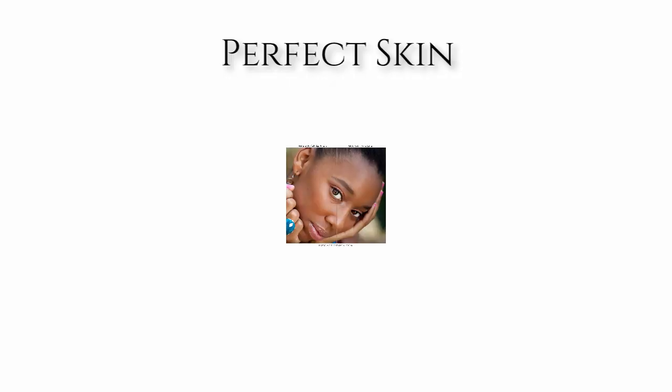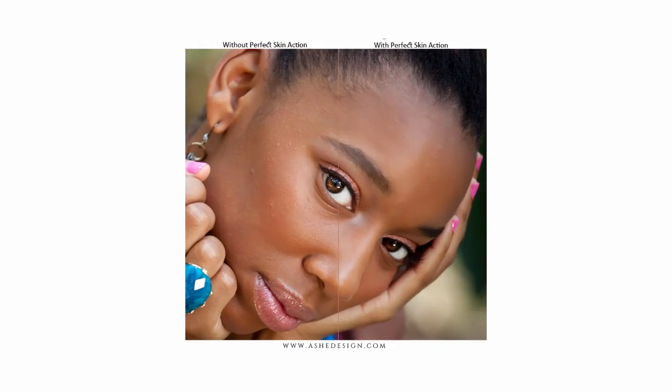First we'll look at the Perfect Skin. This brush-on Photoshop action for photographers is incredibly easy to use. It's versatile and gives you full control of your intensity. It makes photo editing a breeze by clearing up blemishes, fading freckles, smoothing wrinkles, and softening chapped lips — all while retaining the natural skin texture.